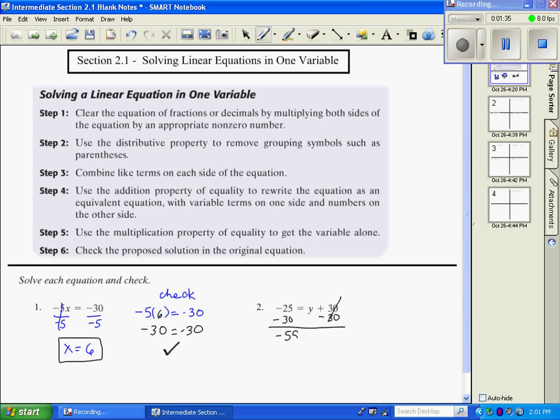Negative 55 equals y. Now if I want to know if that's true, I can check it. Take the original equation and everywhere there is a variable, I'm going to put negative 55 in there in place of y. And I solve so I get negative 25 equals negative 25. And since that's true, it means this is definitely my solution.